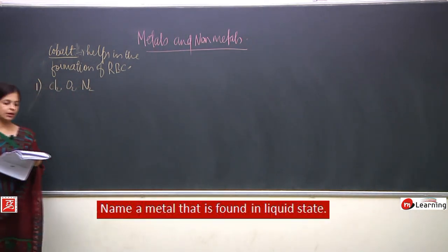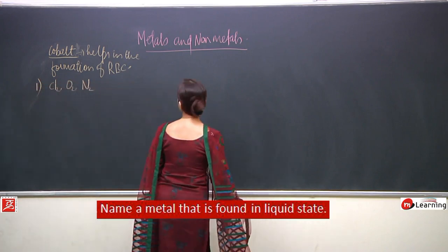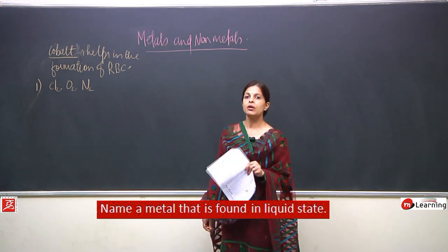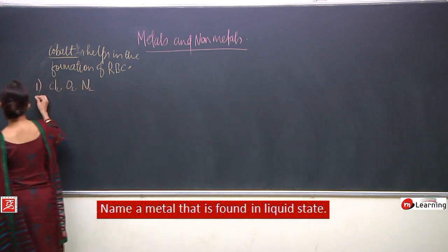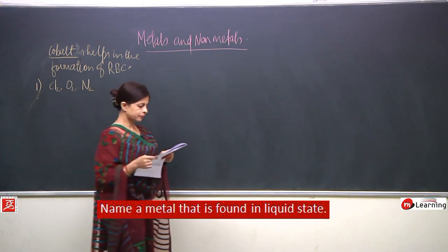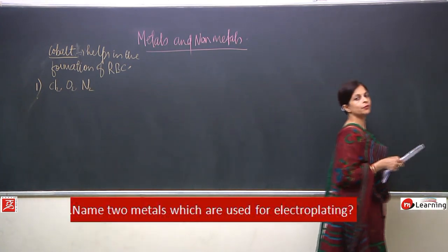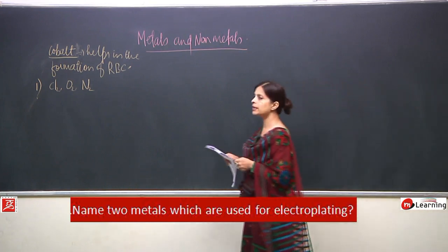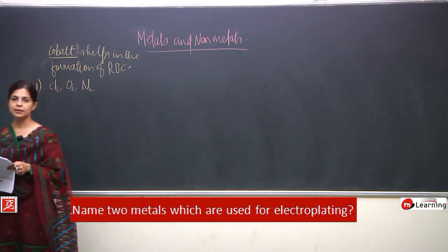Name a metal found in liquid state — it is mercury. Non-metal in liquid state is bromine, metal in liquid state is mercury. Next question: name two metals used for electroplating. We have already studied electroplating, where a covering of one metal is deposited onto another metal using the process of electrolysis.